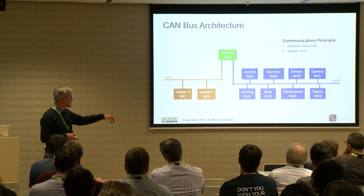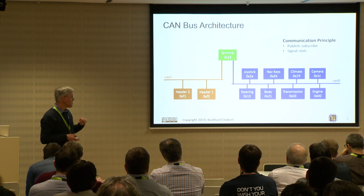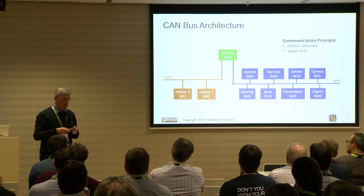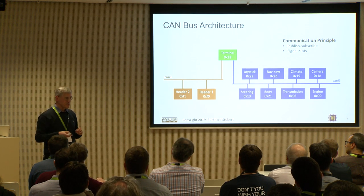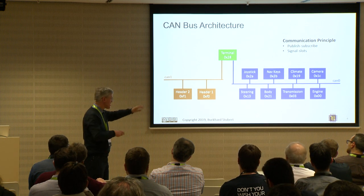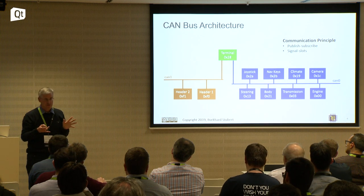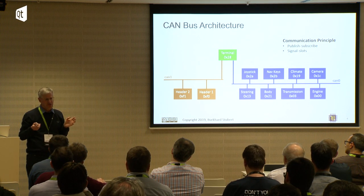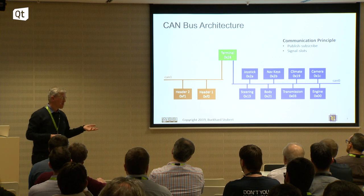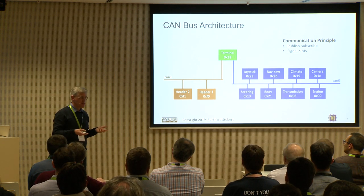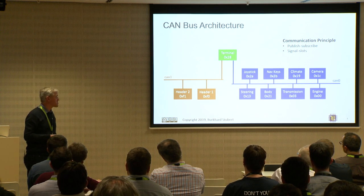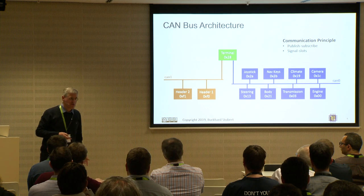The communication principle on CAN buses is like Qt signals and slots — or the publish-and-subscribe pattern. When an ECU sends a message it writes it on the CAN bus, every participant sees it, and each can decide whether to ignore it or act on it. That's exactly the publish-and-subscribe or signal-and-slot concept in Qt.